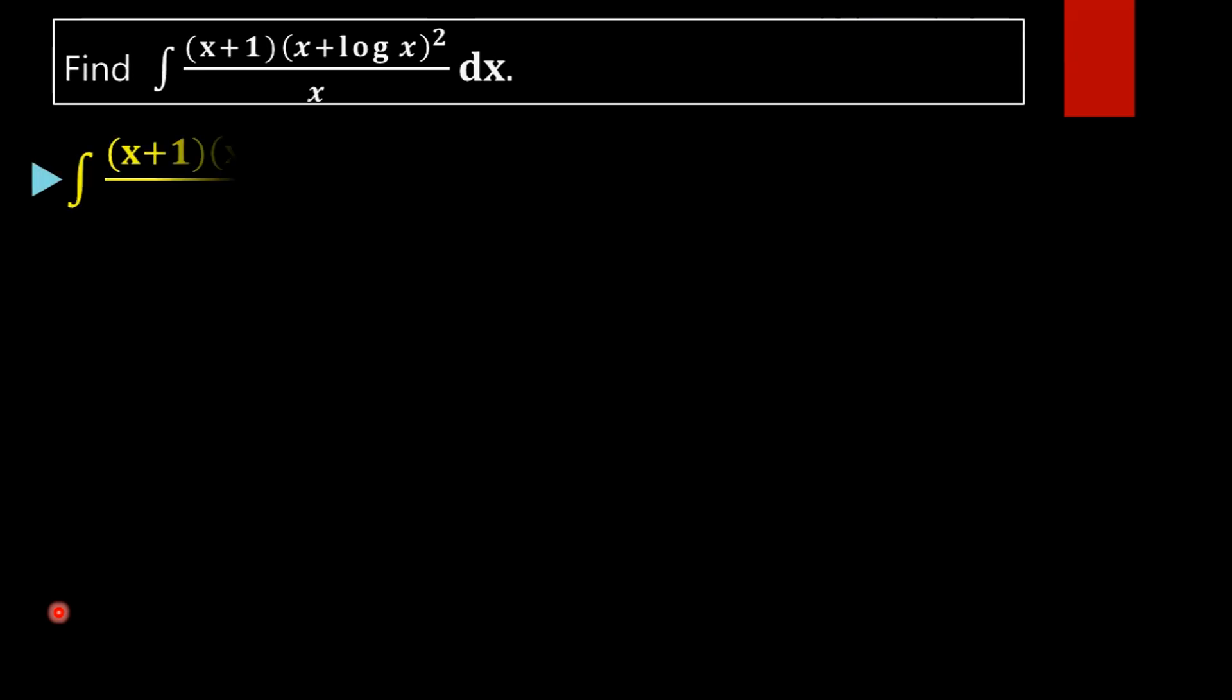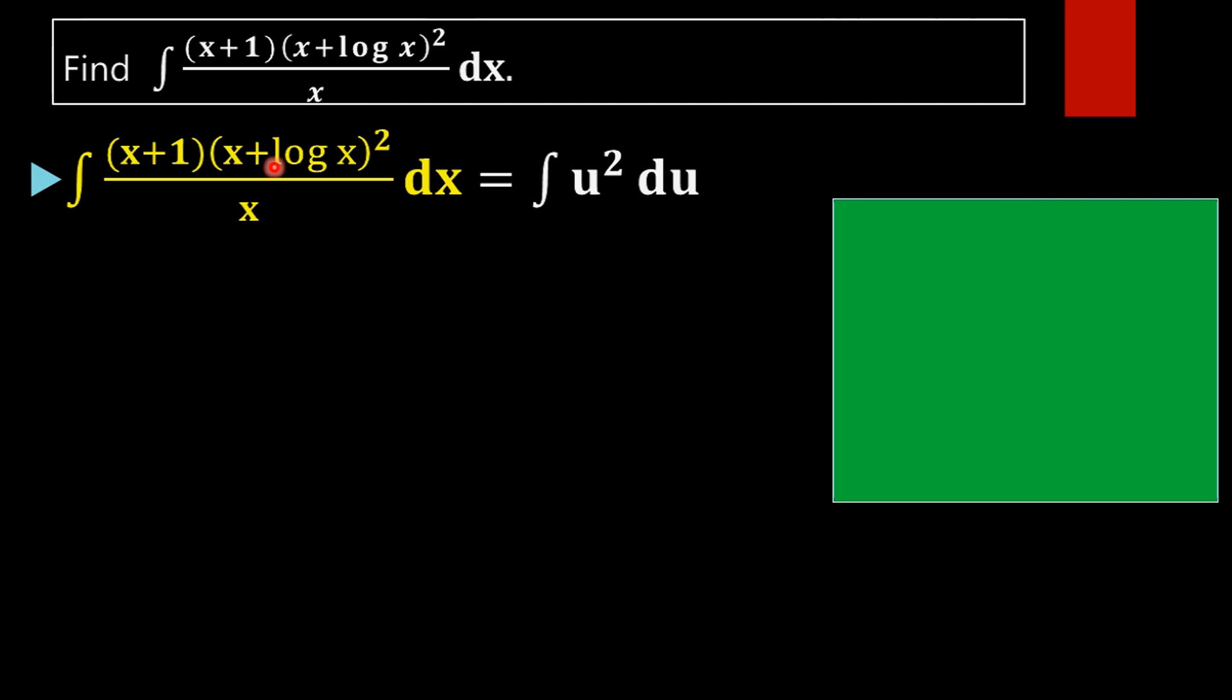That is, we are taking x + log x as u. Put x + log x equal to u. Then on differentiating with respect to x, we will get 1 + 1/x (the derivative of log x is 1/x) equal to du/dx.